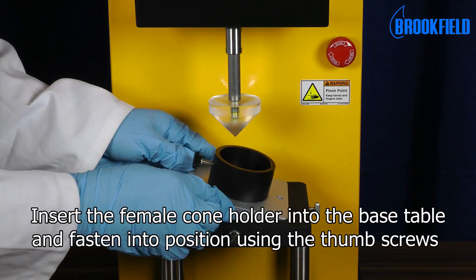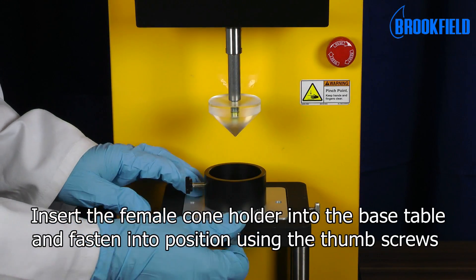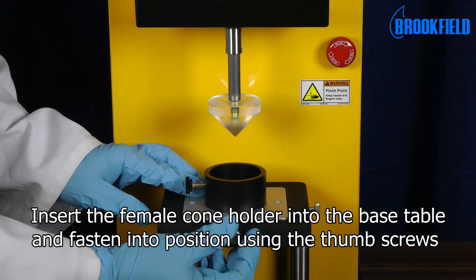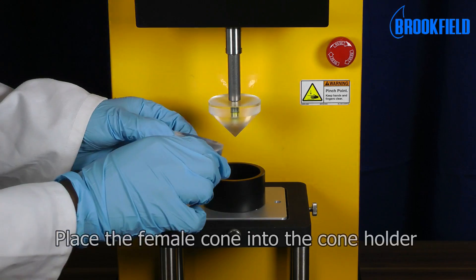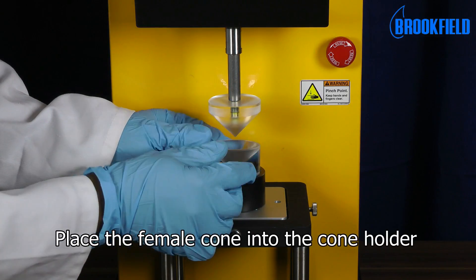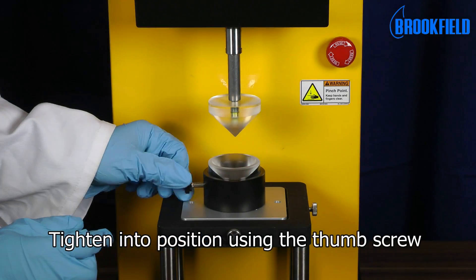Insert the female cone holder into the base table and fasten into position using the thumbscrews. Place the female cone into the cone holder and tighten into position using the thumbscrew.